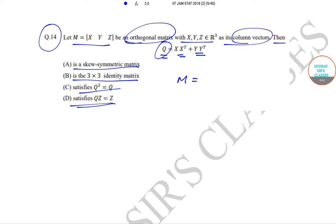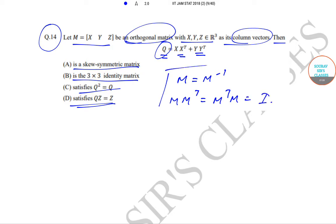Orthogonal matrices are defined by M transpose equal to M inverse. Also, M times M-transpose equals M-transpose times M, which equals the identity matrix. This is the definition of an orthogonal matrix.